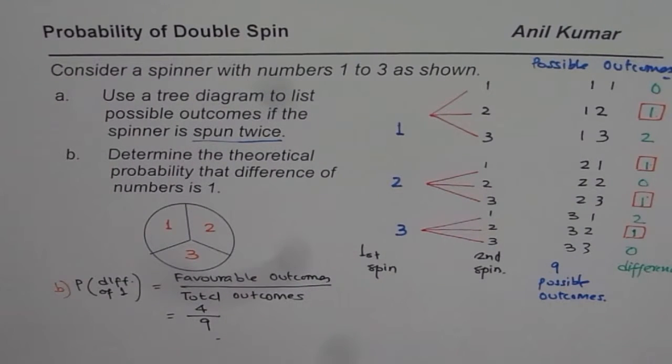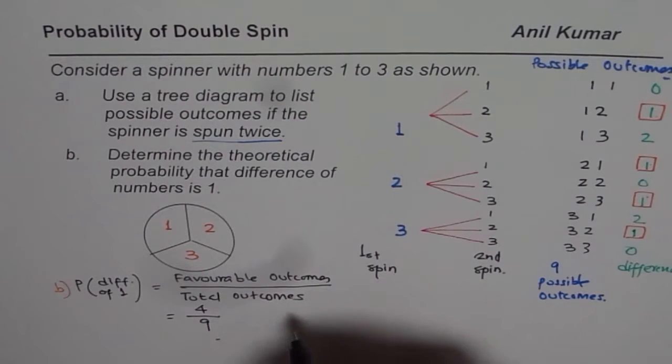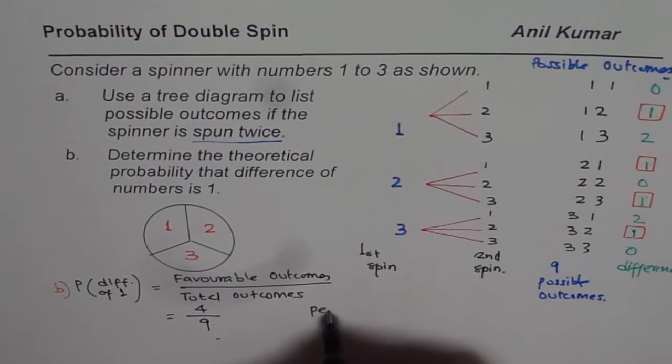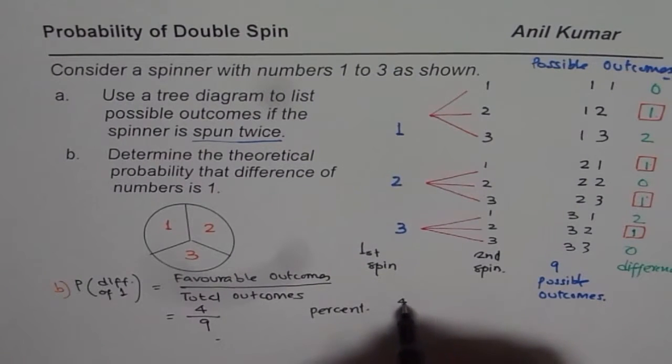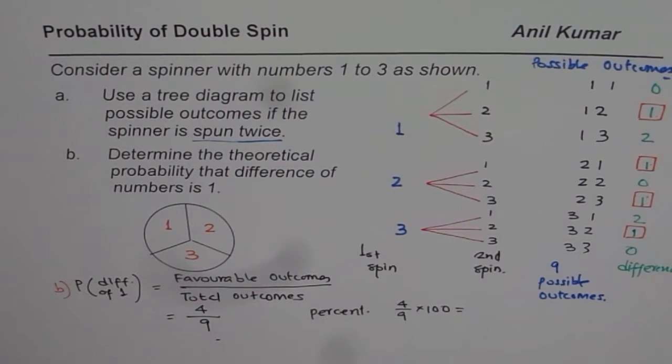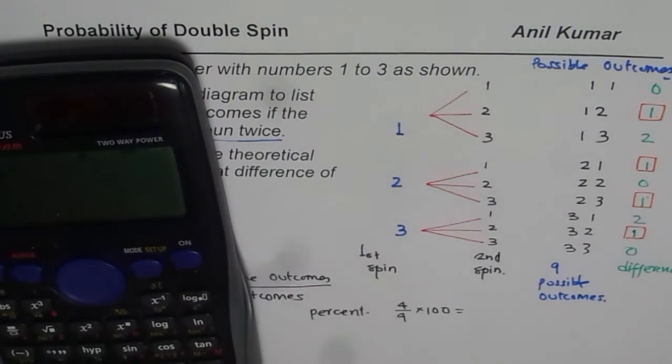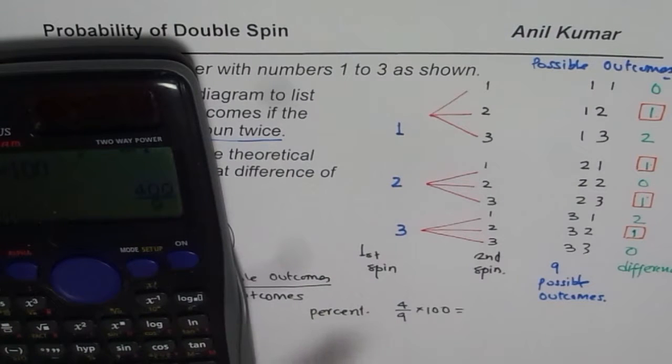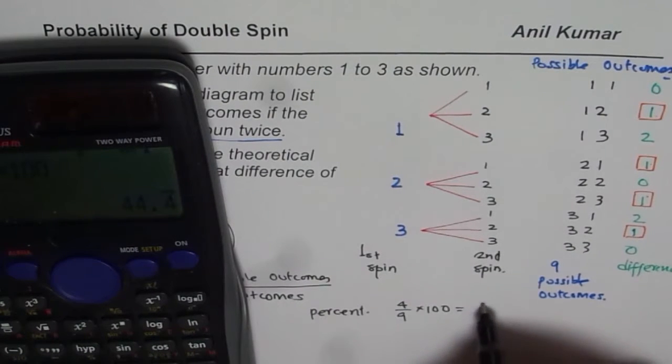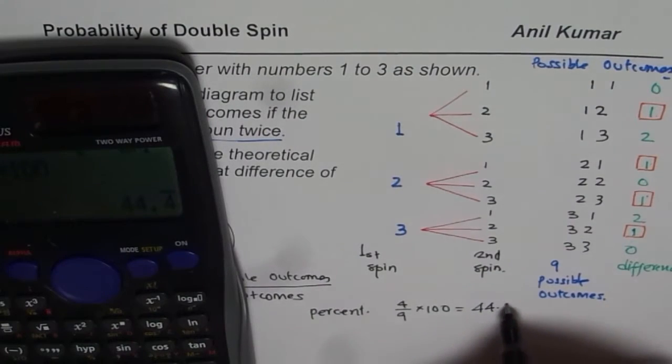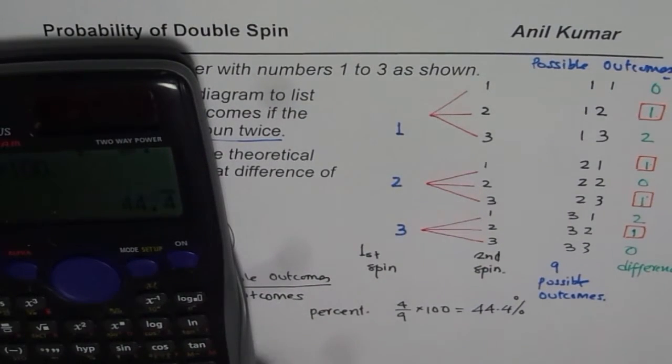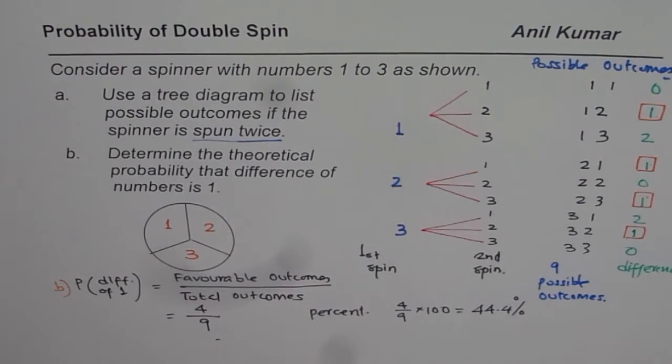So that is one way of writing the answer. The other is in percent form. We could also say in percent, that is 4 over 9 times 100. So let us calculate this also. So we have 4 divided by 9 times 100, which is 44.4%. Do you see that? So we could write this answer in percent or in fraction.